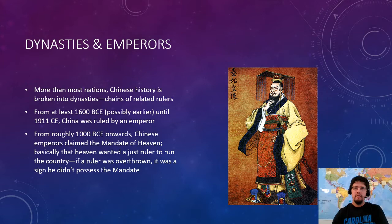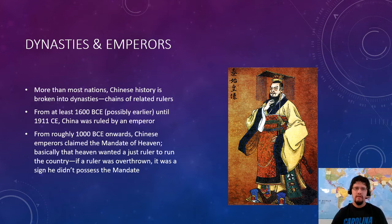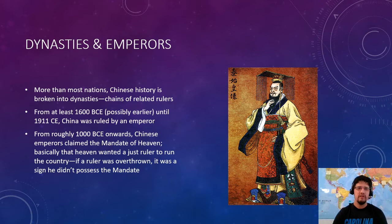China's history is organized a bit differently than other nations' histories. Egypt had dynasties too, and you'll occasionally hear dynastic references in European history, but in China the dynasties are pretty much must-know information — we're going to look at the first three today. A dynasty is a chain of related rulers. The length of time China was ruled by emperors is really impressive: from 1600 BCE to 1911 CE — just 107 years ago. There are two vocab words on this slide: dynasty and mandate of heaven.